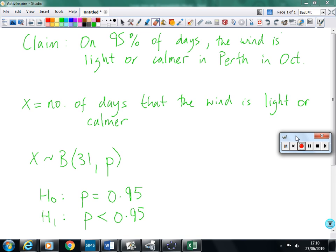Anyway, we're a little bit dubious about that, so we decide to use a large data set to investigate, and we are going to test using this variable. So X is the number of days where the wind is light or calmer. We're testing that, and X follows a binomial distribution with 31 trials and a probability of success of P. So 31 trials because we're looking at the data from October, so October 2015.